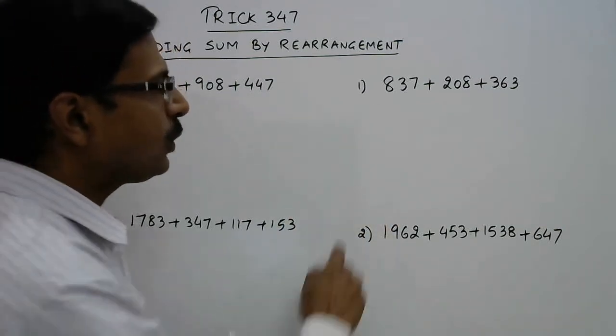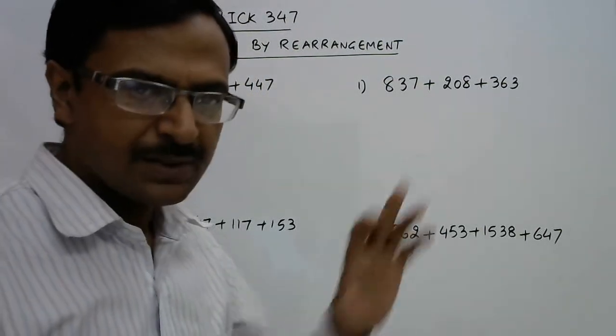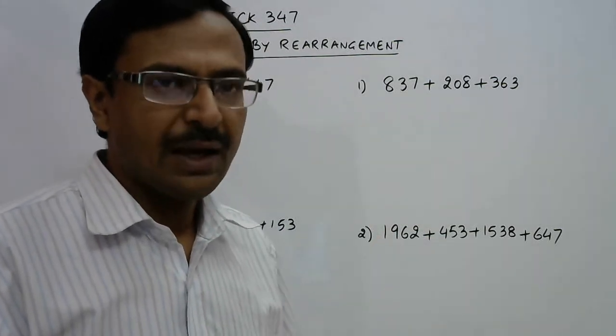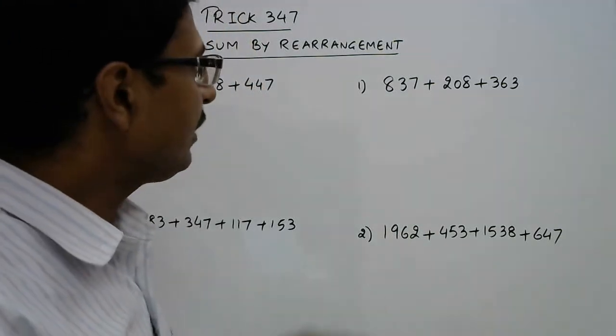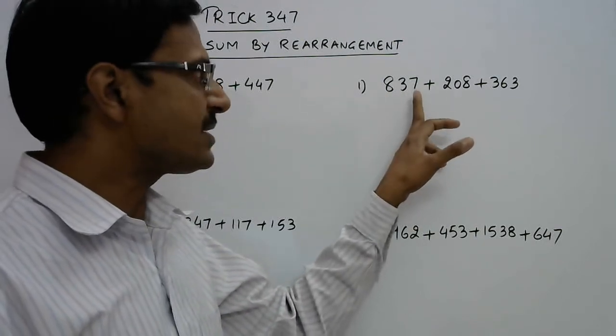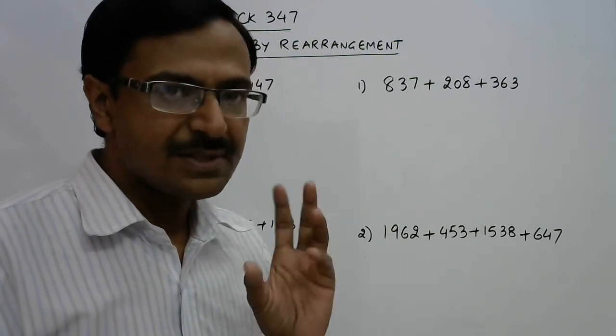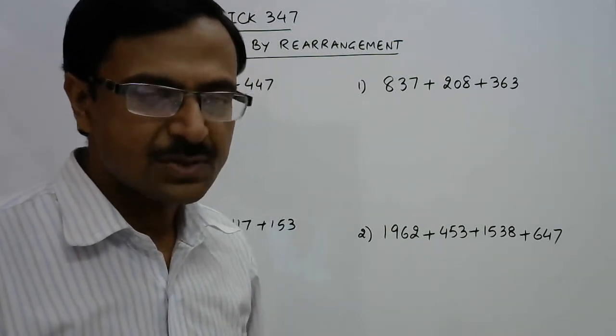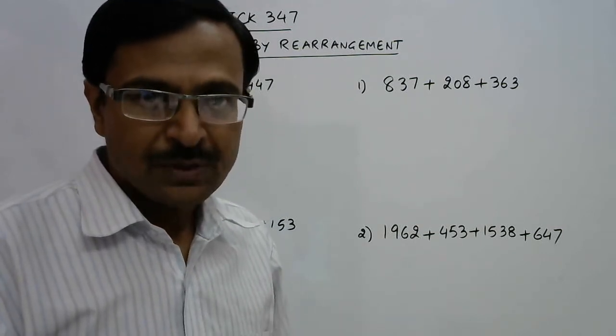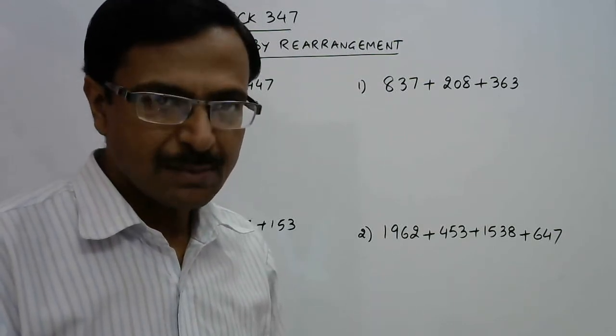The use of base quantities is used in this method of rearrangement. If you add the first two numbers, 447 and 808, the unit digits 7 and 8 add up to 15, so you'll have 5 in the units place. But if you add 837 with 363, the unit digits 7 and 3 add up to 10, so you get 0 in the units place. This is what we want.